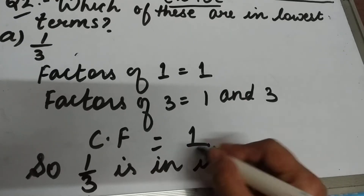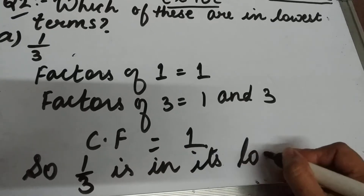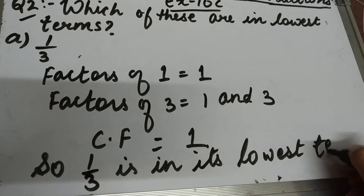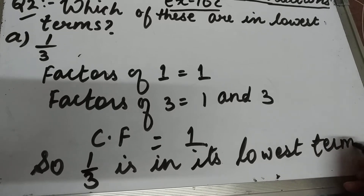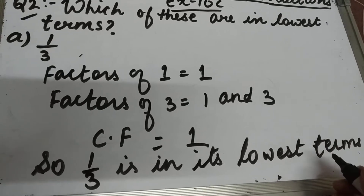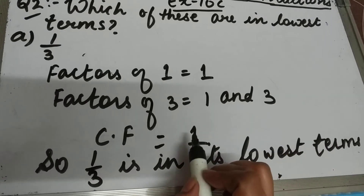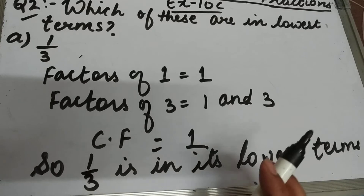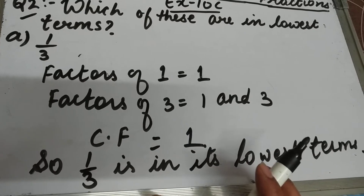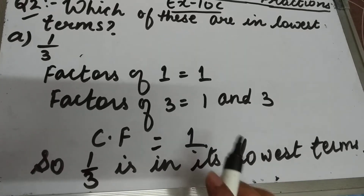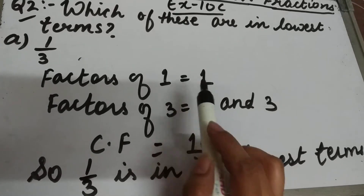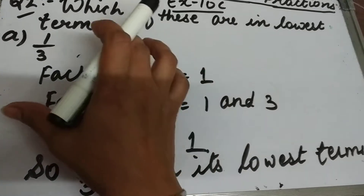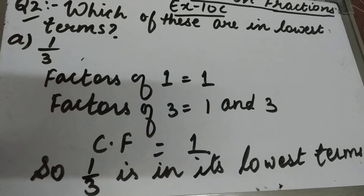If the common factor between the numerator and denominator is only 1, then the fraction is said to be in its lowest terms. Here the common factor is 1, so 1 by 3 is in its lowest terms.